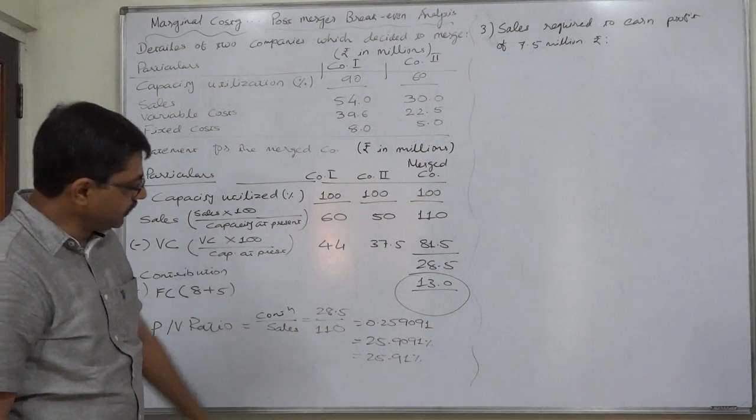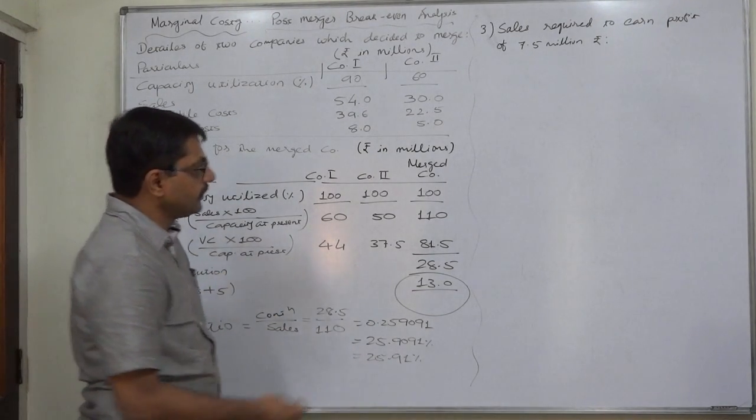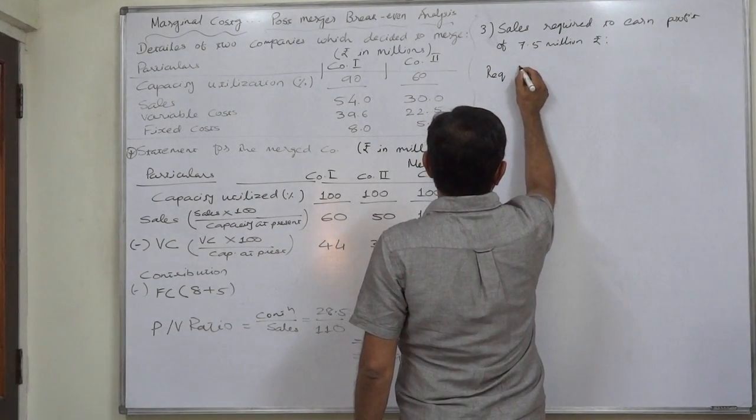And our PV ratio of the merged plant is 25.91 percent. We are going to use the same sales formula.